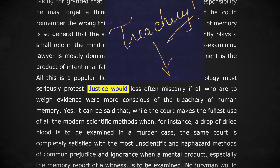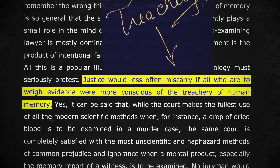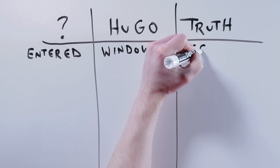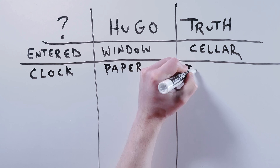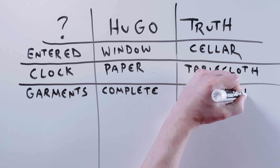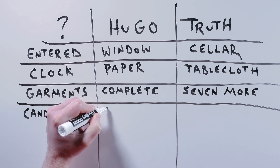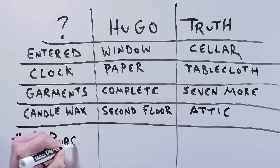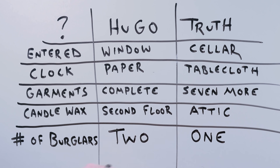Munsterberg suggested that justice often miscarried due to the treachery of human memory. And to prove it, he pointed the finger at himself. He wasn't some academic pontificating on criminal justice theory — he was robbed. And as a witness, he messed it all up. He testified under oath that burglars entered his house through a window; they actually came in through the cellar. He said they left a clock packed in paper; it was wrapped in a tablecloth. He gave a complete list of garments that were stolen — it turns out they took seven more than he said. He claimed he found candle wax on the second floor, but the wax drippings were actually in the attic. Finally, he reported two burglars — but maybe it was just one. He had no way to tell.